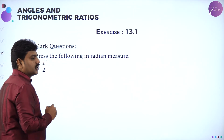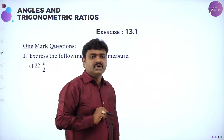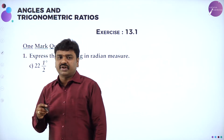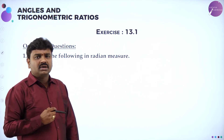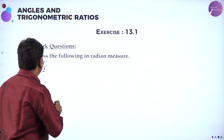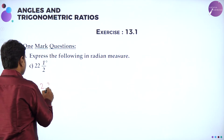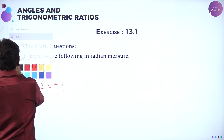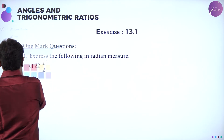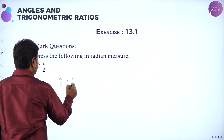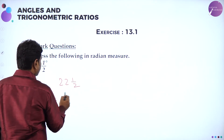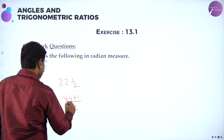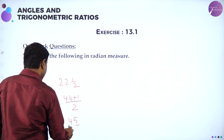Next is 22 and a half degrees. This is an important question. If they give a mixed fraction, convert it into a fraction first, then multiply by pi/180. So 22 and a half equals 22 plus one-half, which is 45/2 degrees.